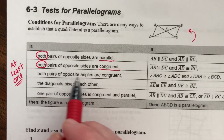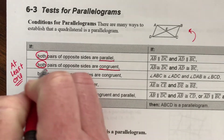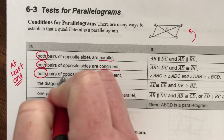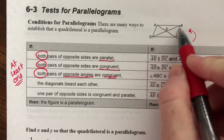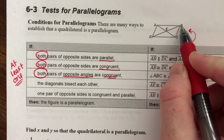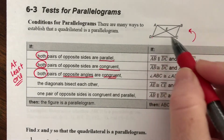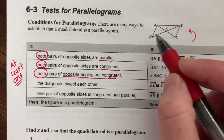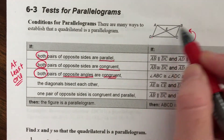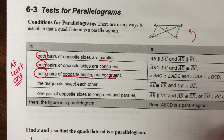Third: both pairs of opposite angles are congruent. Opposite angles are diagonal, so D and B have to be congruent, and A and C have to be congruent for this to be a parallelogram. You can't just have one pair of opposite angles congruent — both pairs of opposite angles have to be congruent.